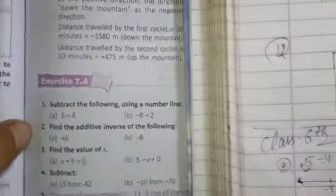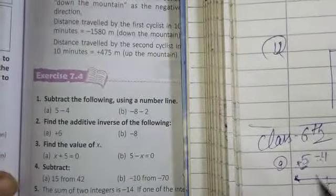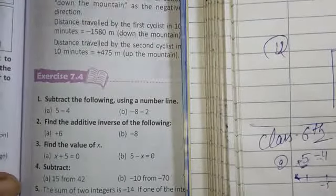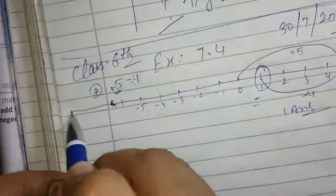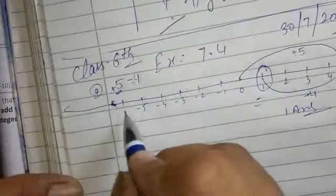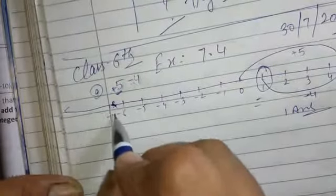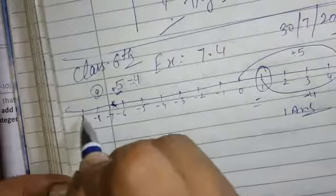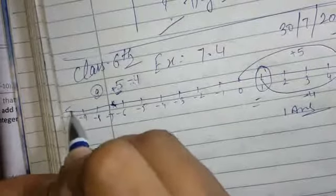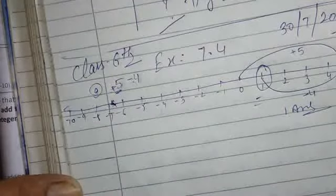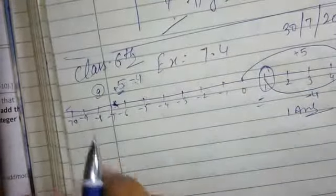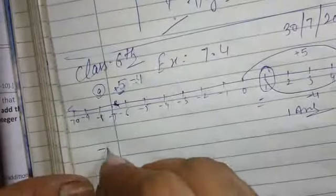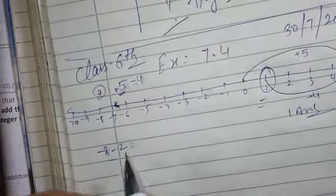Second problem: minus 8, minus 2. So students, हम number line को बढ़ा लेते हैं — minus 6, minus 7, minus 8, minus 9, minus 10 तक. आपको इसके लिए different number line use करनी है. Value क्या दी है? Minus 8, minus 2.